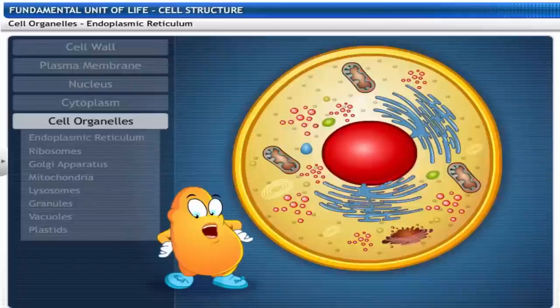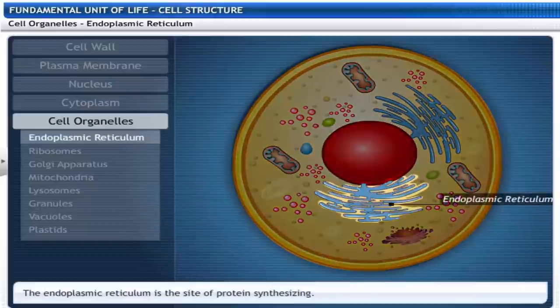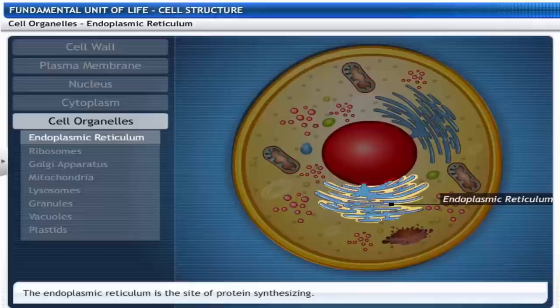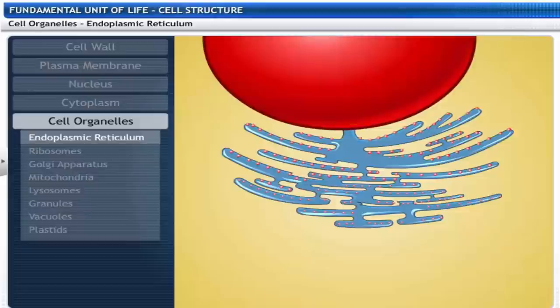Did you know that the cell has different organelles? We will explore them now. This is the protein synthesizing site of the cell called the endoplasmic reticulum. It is an irregular network of double tubular membrane continuous with the nuclear membrane on the inside.